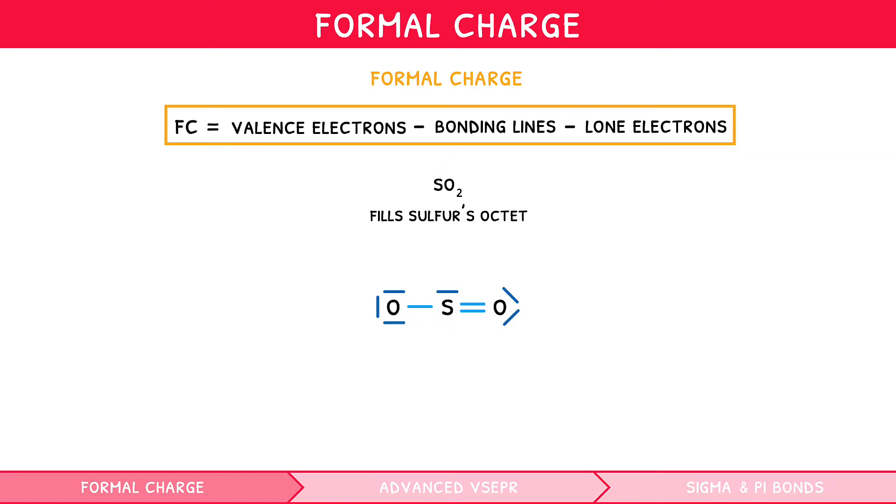However, remember our rule that sulfur is in period 3 or above, so can have an expanded octet. Therefore, a second structure could be created with a double bond for each oxygen. Whilst you should feel confident with our stages to know which is the best structure, to decide mathematically we can use formal charge.